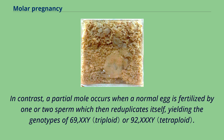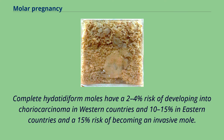In contrast, a partial mole occurs when a normal egg is fertilized by one or two sperm which then reduplicates itself, yielding the genotypes of 69,XXY or 92,XXXY.